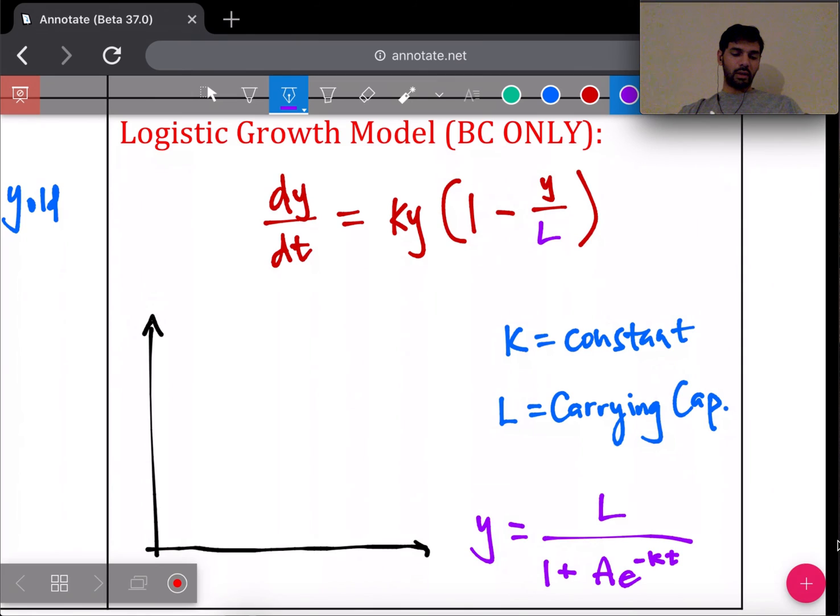On the graph, the original function y equals this guy right here—these two go hand in hand. The carrying capacity is a horizontal line right here, represented by whatever value L is. The way this graph looks is it starts off flat, increases exponentially, and then levels off. The carrying capacity usually has to do with population of some species or bacteria that's growing, and the carrying capacity is the threshold that that environment can hold at most.